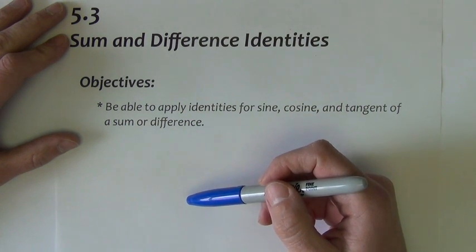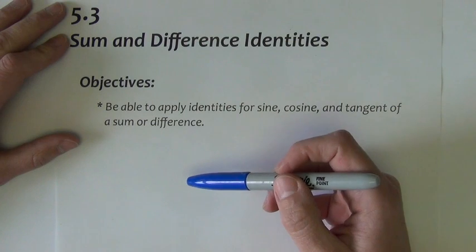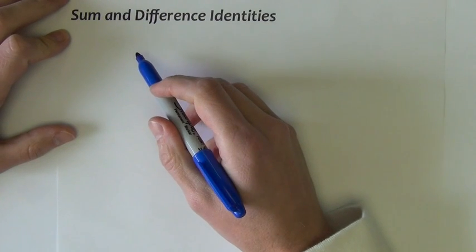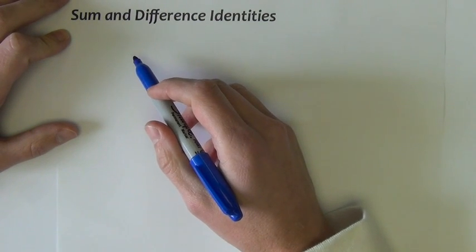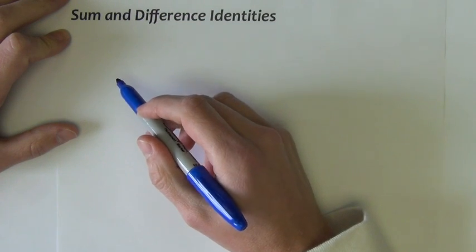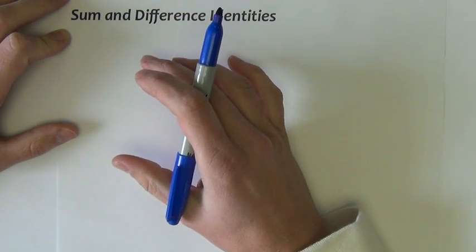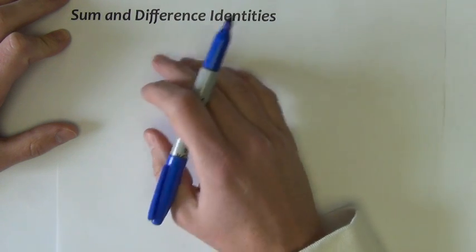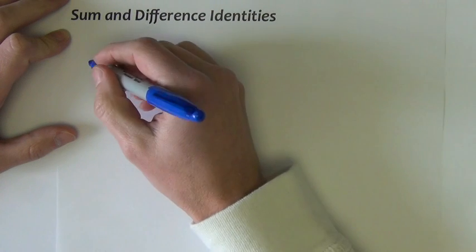We'll also use them to expand on the types of identities that we are able to verify. First, let's write out our sum and difference identities. This is probably a slide or a section of notes that you're going to want to keep in front of you for the entire remainder of the video so that you can reference these identities as we use them.